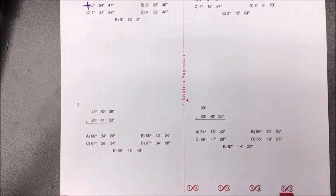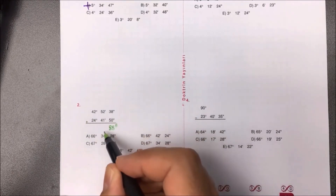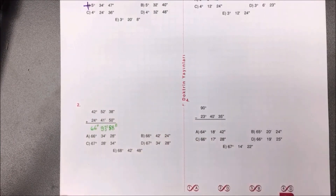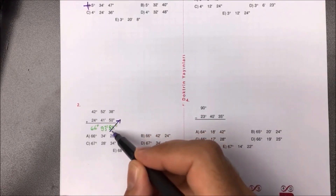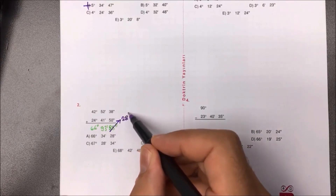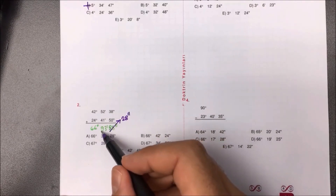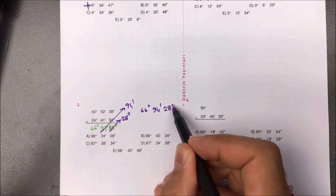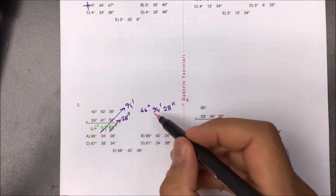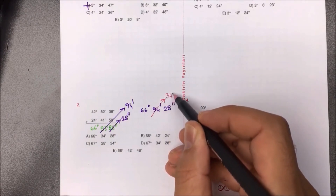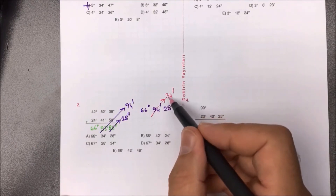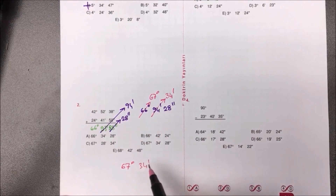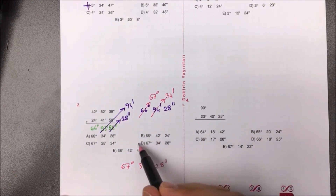İkinci soruda farklı bir durum ortaya çıkıyor. Toplayınca saniyeler 88, dakikalar 93, dereceler 66 geliyor. 88 saniyenin içinden 60 saniye = 1 dakika alınca 28 saniye kalır; dakika 94 olur. 94 dakikanın içinden 60 dakika = 1 derece alınca 34 dakika kalır, derece 67 olur. Yanıt: 67° 34' 28'', D seçeneğidir.